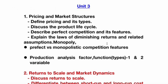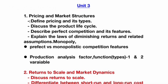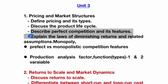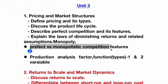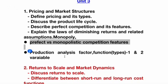Unit 3 covers: define pricing and its types, discuss the product life cycle — set as a topmost question this time. Also: describe perfect competition and its features, explain the law of diminishing returns, assumptions and definition of monopoly, and perfect versus monopolistic competition — the differences among them are one of the topmost questions this time which may occur in the Unit 3 question.